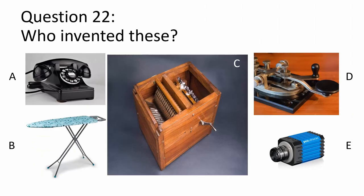The last question: who invented these inventions? A is a phone, B is an ironing board, C is a cotton gin, D is a telegraph, and E is an ultraviolet camera. The phone was invented by Antonio Meucci, the ironing board by Sarah Boone, the cotton gin by Eli Whitney, the telegraph by Samuel F.B. Morse, and the ultraviolet camera by George Carruthers.